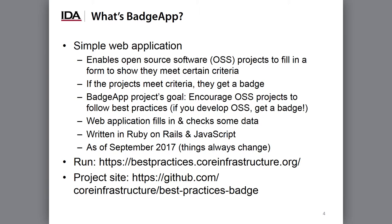From a technical viewpoint, it's a simple web application where users fill in a form and it also checks some external data. The badge application is written in Ruby on Rails and JavaScript. There's absolutely no requirement that your applications use those technologies — that's just the technology used here. I'm talking about the badge app as of September 2017. If you're curious to see how this program actually runs or see its actual code, the URLs for both are available here.